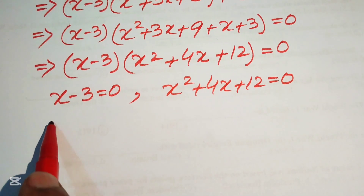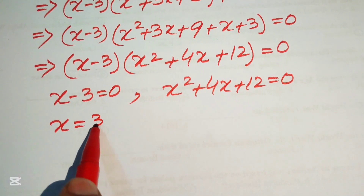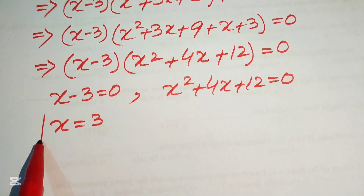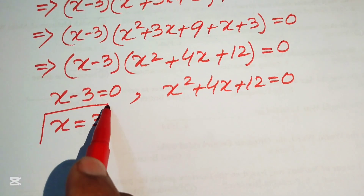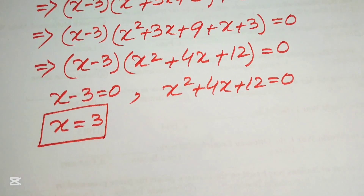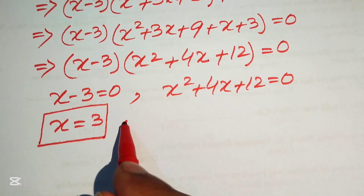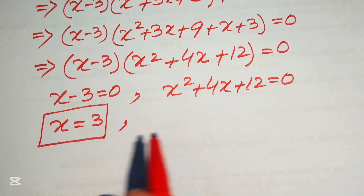From the first case, x minus 3 equals 0, we easily get x equals 3. This is our first real solution of the equation.